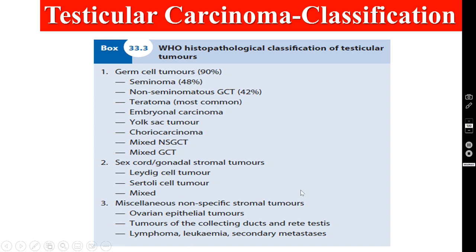This is the WHO classification for testicular carcinoma. Germ cell tumors comprise 90%: seminoma is 48%, non-seminoma is 42%, which consists of teratoma, embryonal carcinoma, yolk sac tumor or endodermal sinus tumor, and choriocarcinoma. Gonadal stromal tumors consist of Leydig cell tumor, Sertoli cell tumor, and mixed cell tumor. Non-specific stromal tumors consist of lymphoma and secondaries in the testicles.